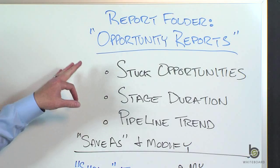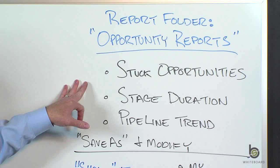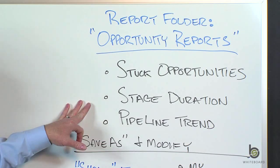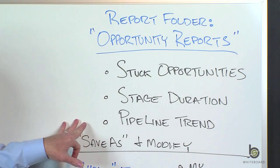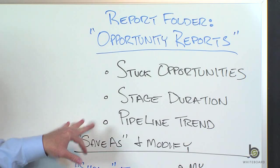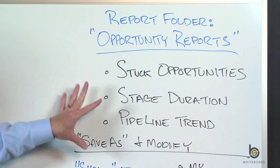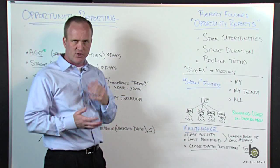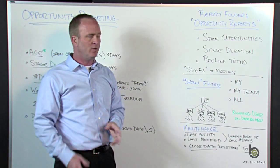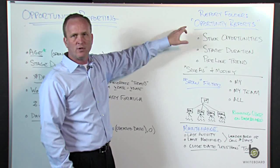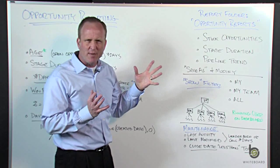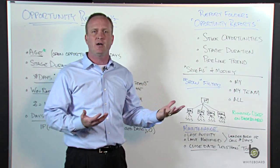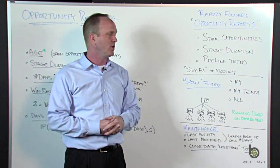Some ones you should look at: stuck opportunities, an aging report, stage duration — what we were just referring to — and pipeline trend. Take a look at those. If you're trying to get used to opportunity reporting, go into this report folder and steal shamelessly. Salesforce has a lot of pre-canned out-of-the-box reports you can run.